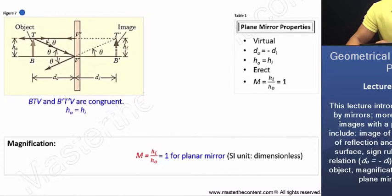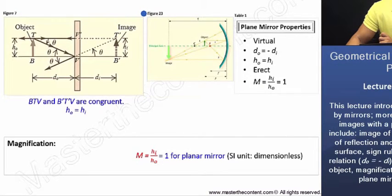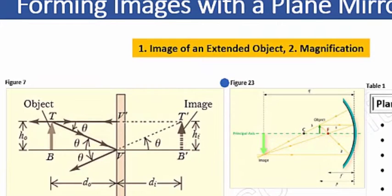And this actually should make sense, considering when you look at yourself in a plane mirror, your image is the same size as you. Now, I just want to quickly touch base on one other point looking at figure 23. The opposite of an erect image is an inverted image, meaning the image arrow points in the opposite direction to that of the object arrow.